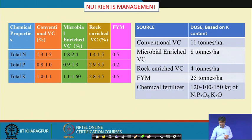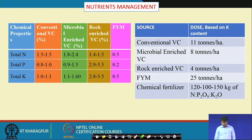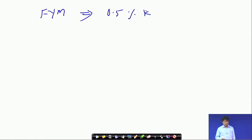For example, consider farmyard manure (FYM). To meet the requirement of 150 kg K₂O per hectare, we calculate as follows: FYM contains 0.5% K. First convert K to K₂O: K × 1.2 = K₂O. So FYM contains 0.5% K, which equals 0.5 × 1.2 = 0.6% K₂O.